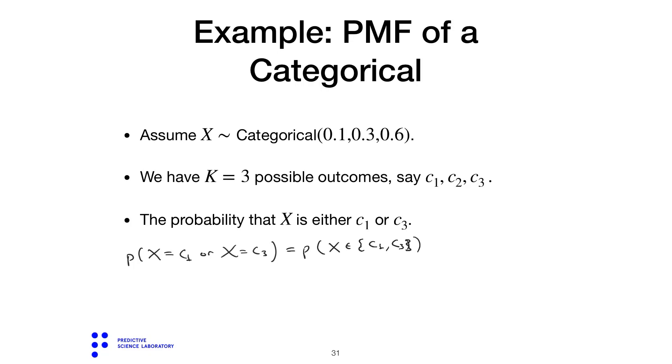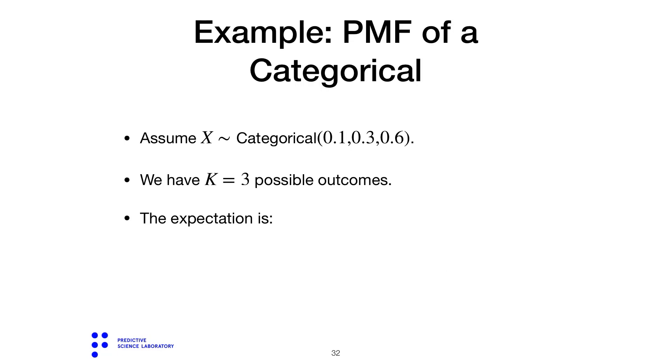This can be decomposed as the probability that X equals c1 plus the probability that X equals c3. The first one is 0.1 and the second one is 0.6, so the result is 0.7.